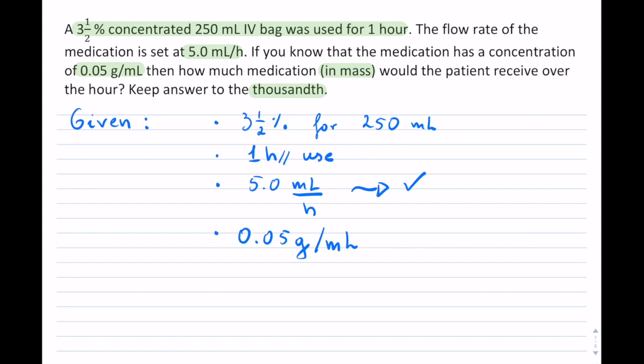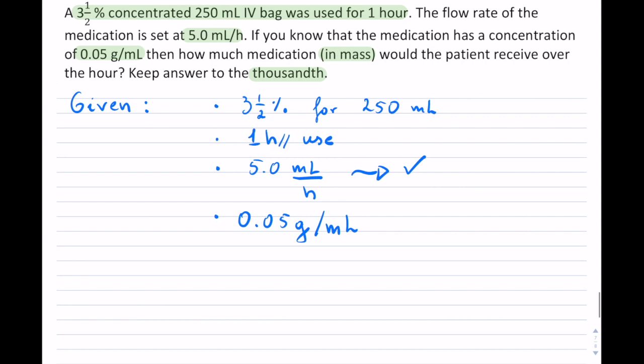Let's take a look and see how to solve this question. Once again, we have an IV bag. Inside of this, we have 250 mL and it has a concentration of 3.5%. We can find out how much medication we have inside of this 250 because we know the concentration.